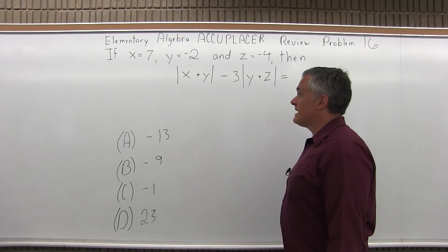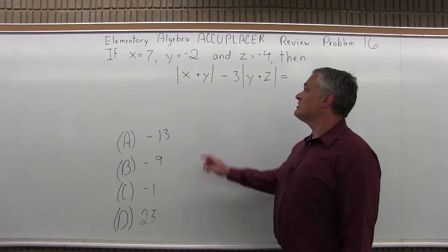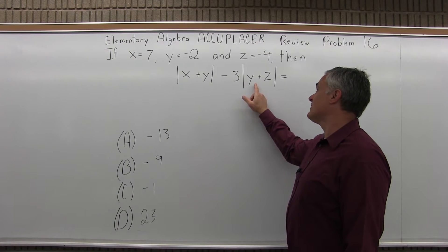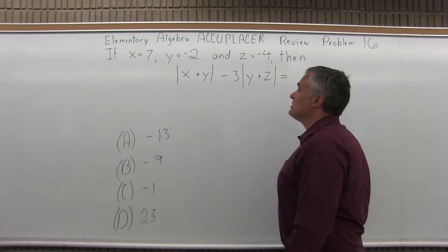If x is 7, y is negative 2, and z is negative 4, then the absolute value of x plus y minus 3 times the absolute value of y plus z equals what? We have four choices to choose from.